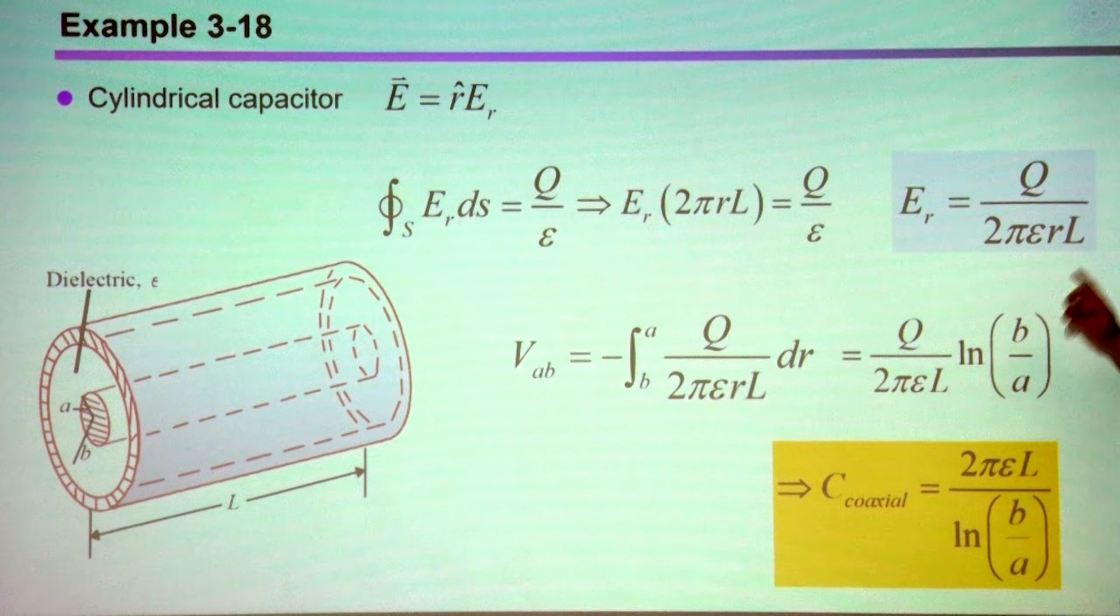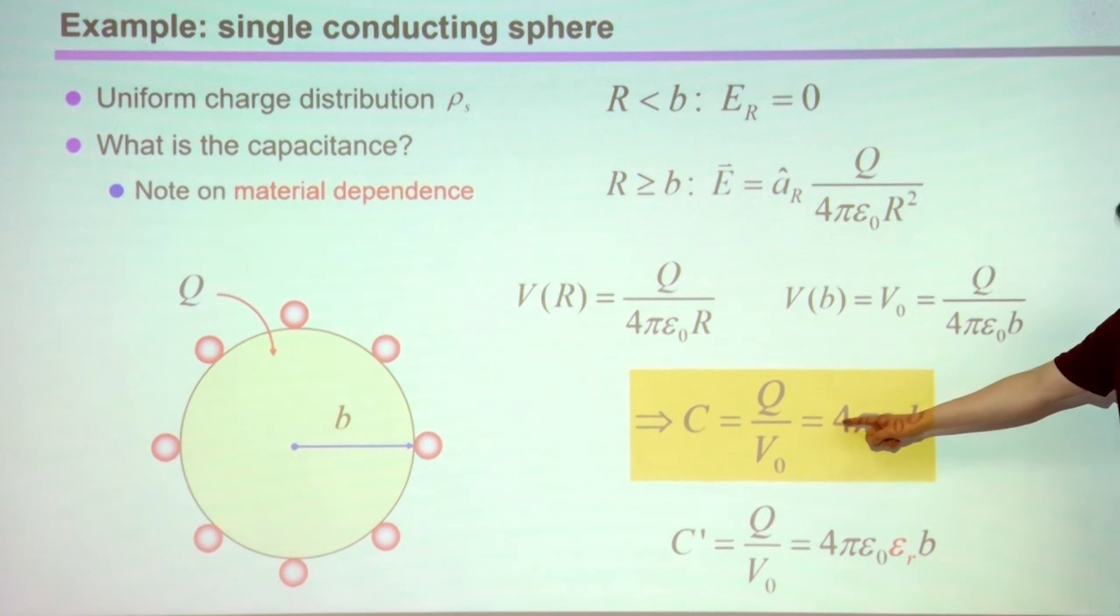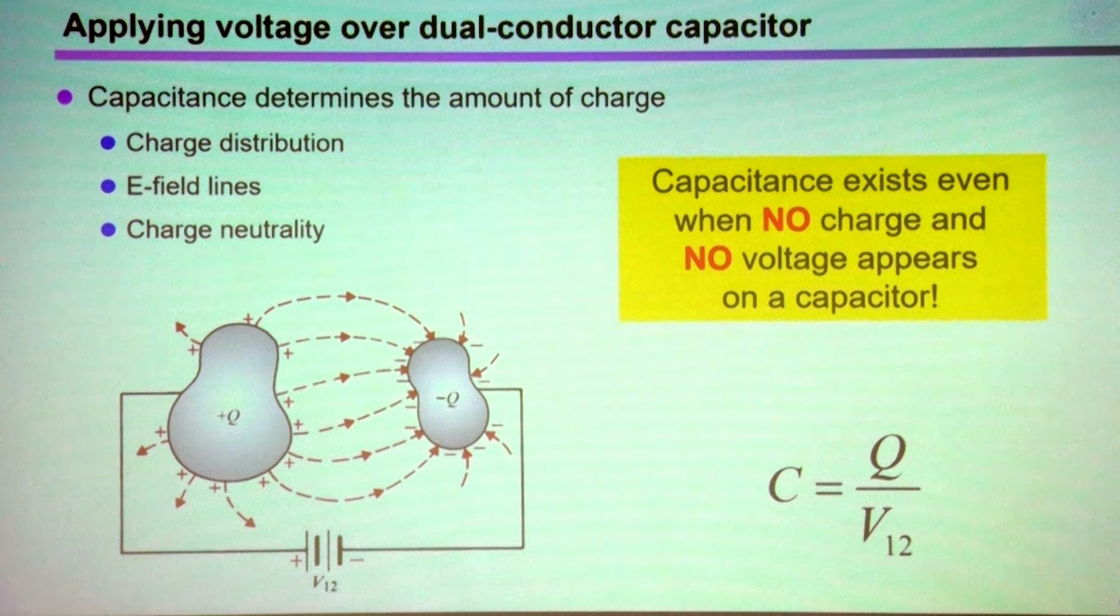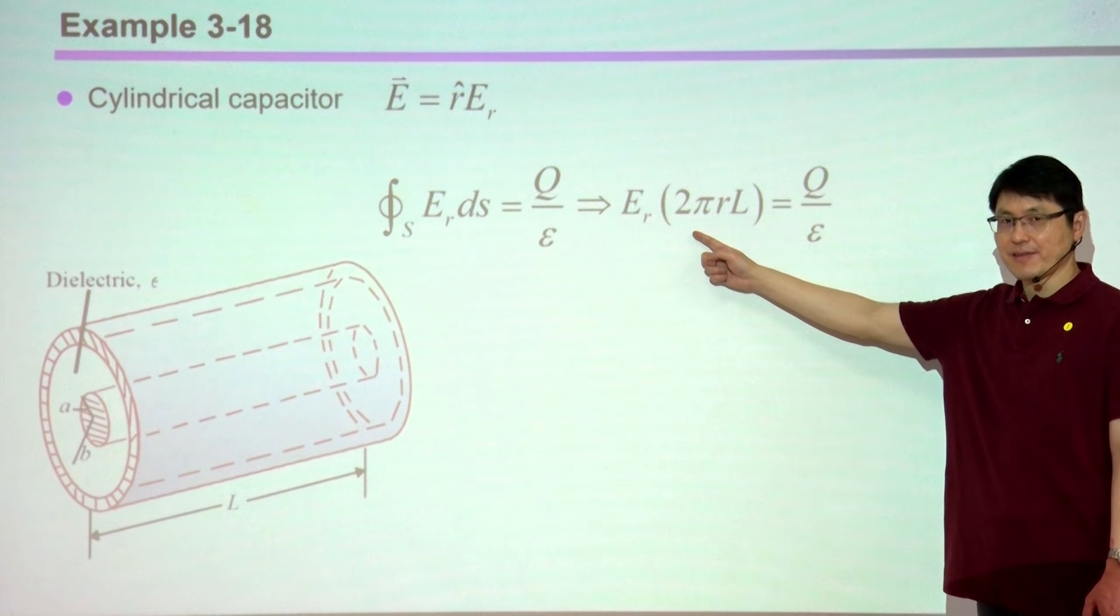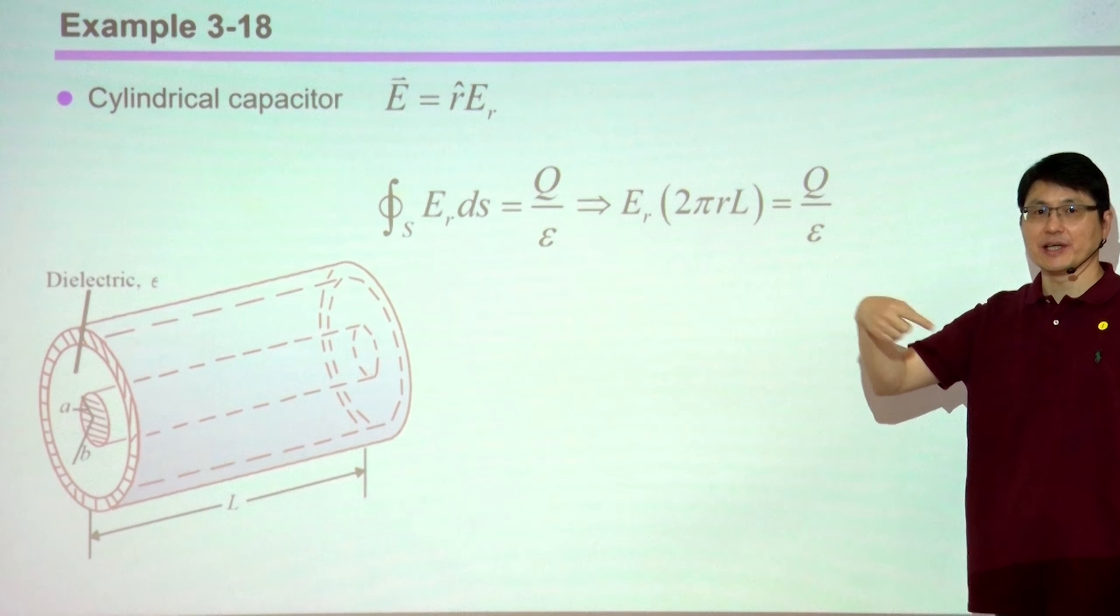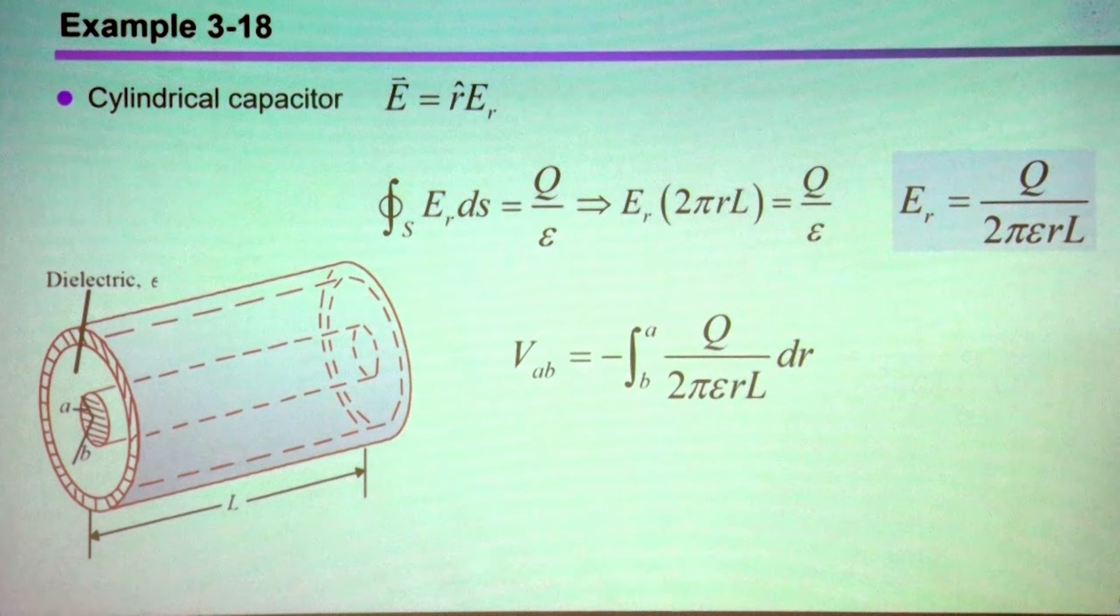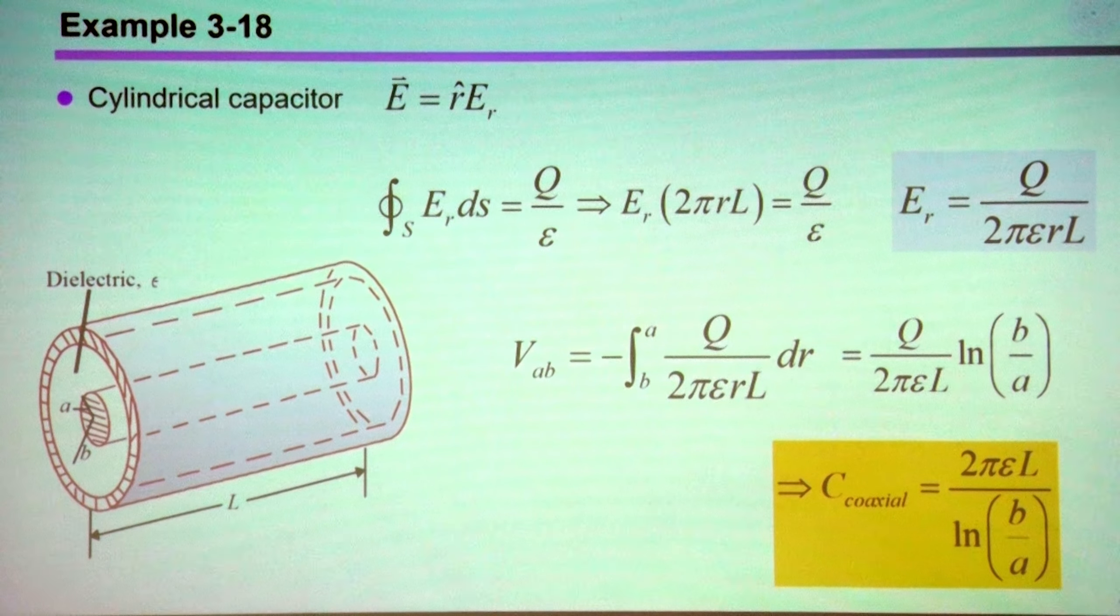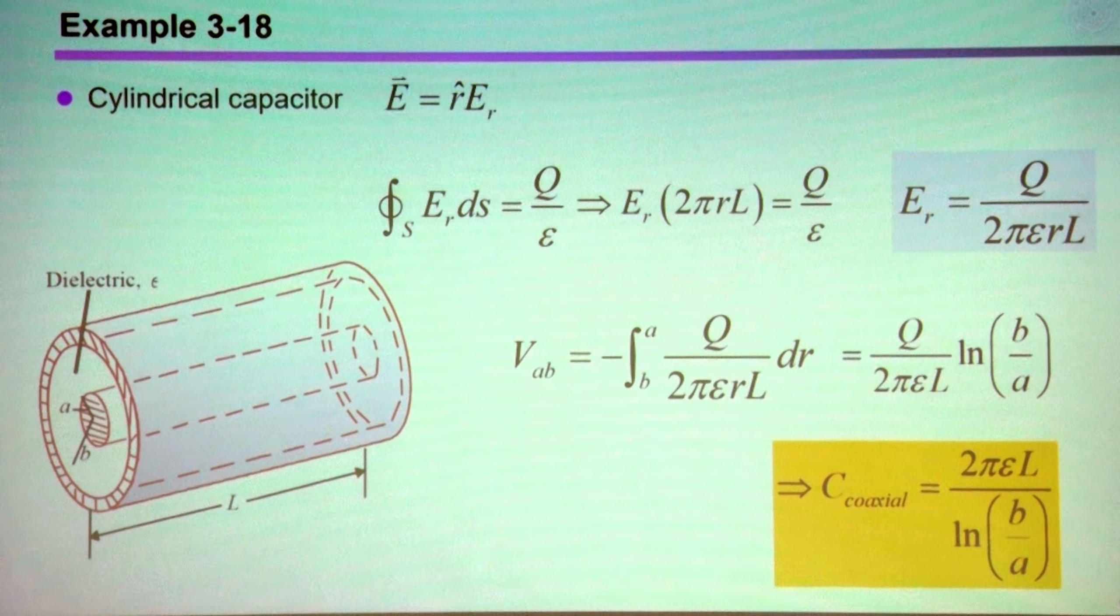If you still remember, in the previous case, we saw this 4πb. 4π something represents a spherical geometry. And now you have cylindrical geometry, you have 2π something. Why? It's due to the fact that your surface is related to the circumference of your circle. It's 2πr. Probably in the future, whenever you see the capacitance having 2π dependence, you can guess its geometry is more like cylindrical. And 4π something is more like spherical.